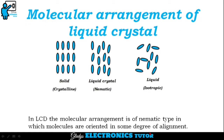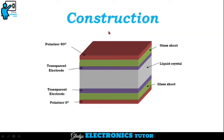This is the molecular arrangement of solid, liquid crystal, and liquid. In solid, molecules are perfectly aligned. In liquid, there is no proper alignment. In liquid crystal, molecules show some degree of alignment.